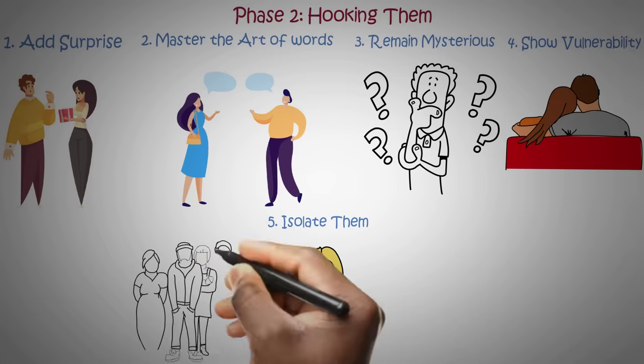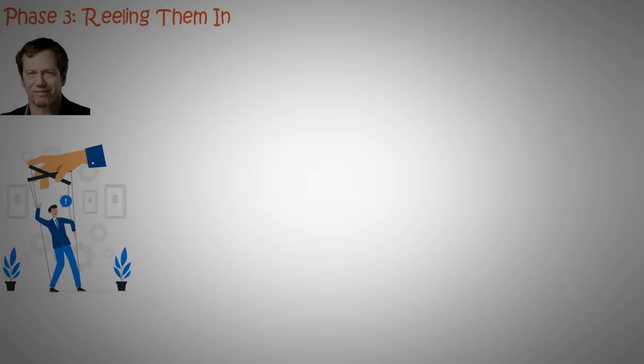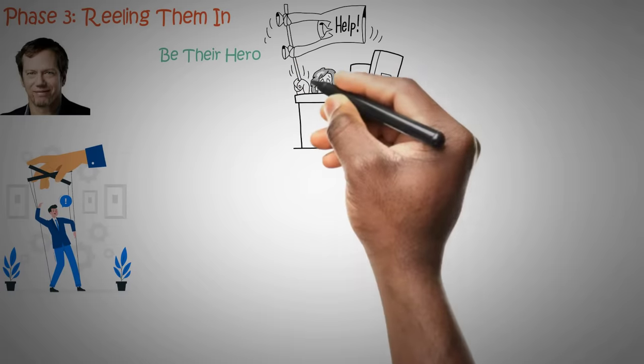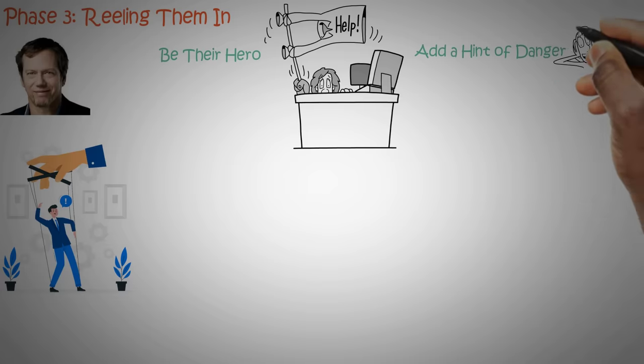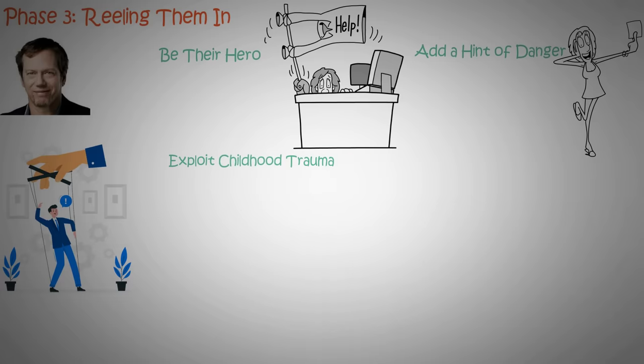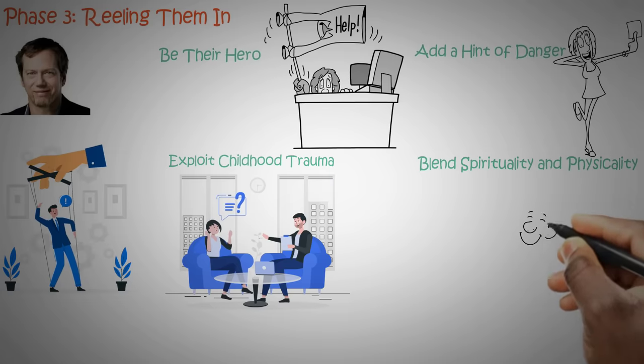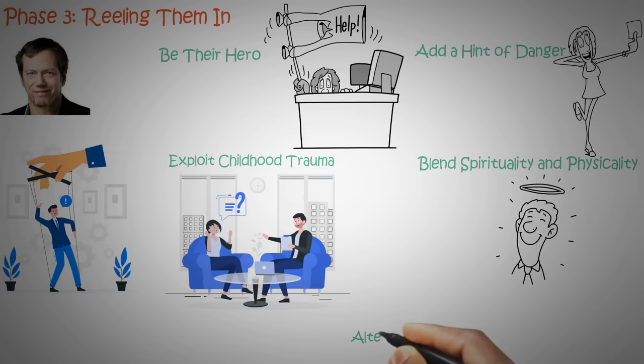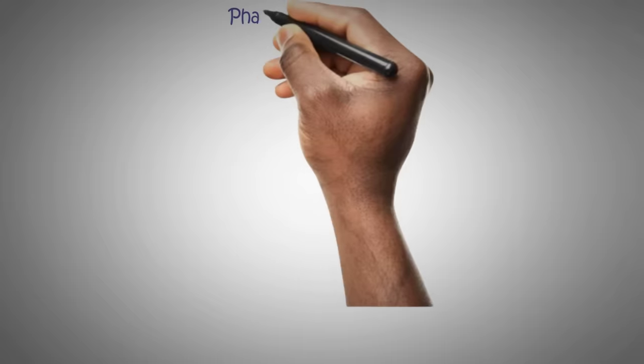Five: Isolate them. Try to separate them from friends and family who might interfere. Phase Three: Reeling Them In. According to Greene, now it's time to manipulate their emotions. One: Be their hero. Find ways to rescue them and be there when they need help. Two: Add a hint of danger. Suggest there's something exciting or forbidden about you. Three: Exploit childhood trauma. Play the role of a therapist and fill the voids from their past. Four: Blend spirituality and physicality. Create a deep bond by incorporating a spiritual element. Five: Alternate pleasure and pain. Keep them on an emotional rollercoaster to create dependency.